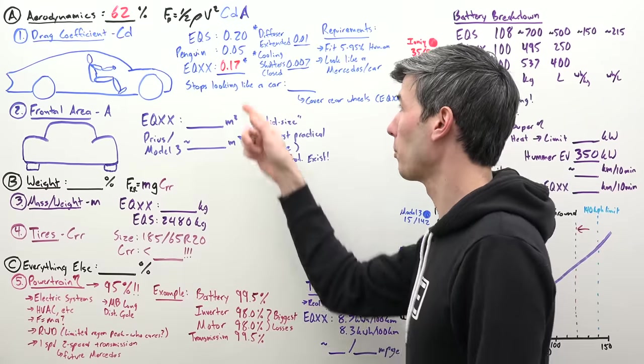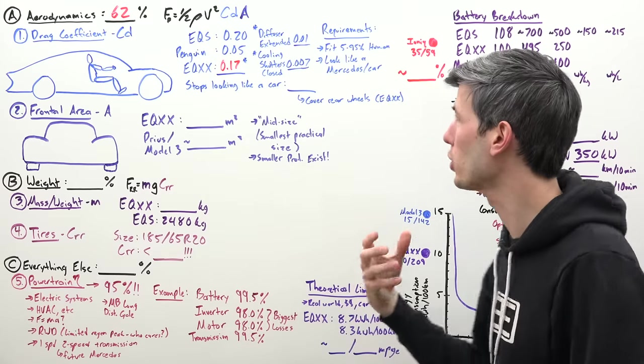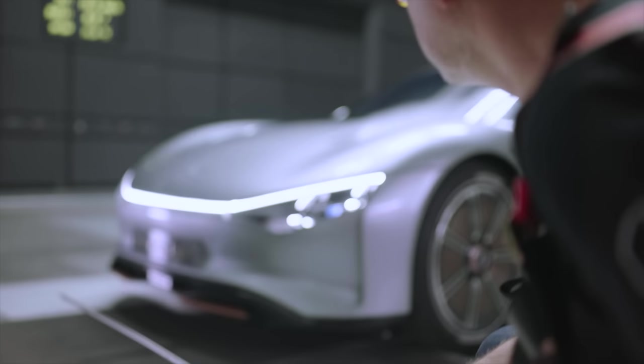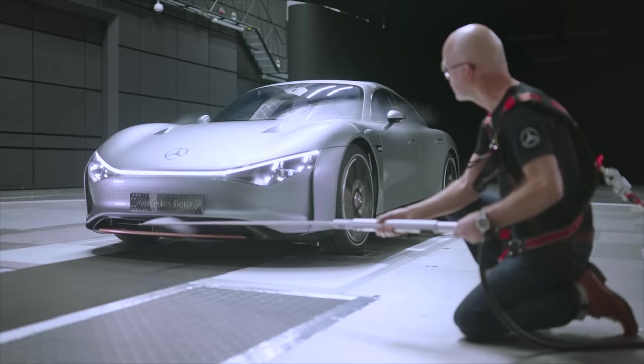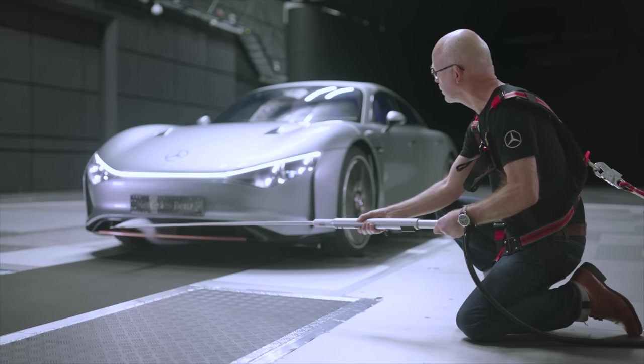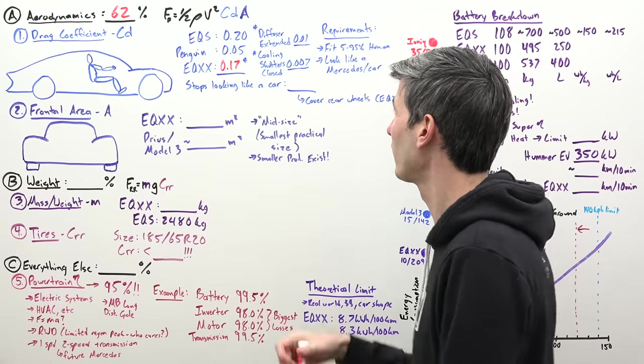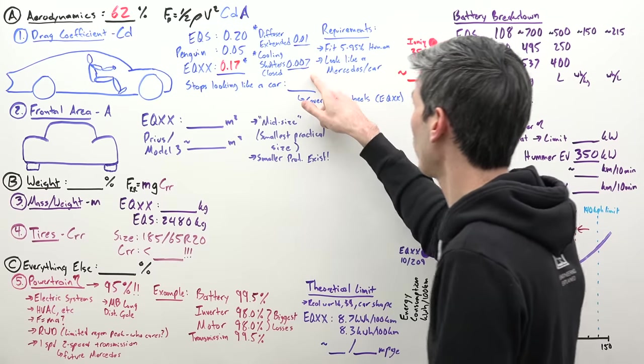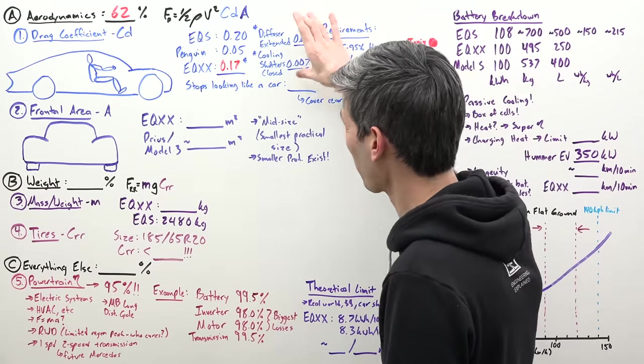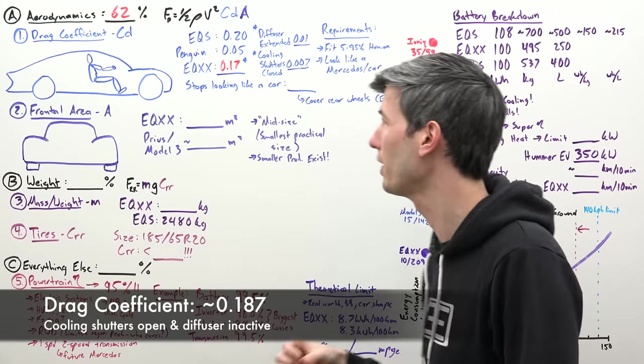Also this 0.17 is with the cooling shutters closed. There are some outlets, exhaust vents on the hood of the car. If this is actually opened and you're allowing airflow through the front with the shutters, that's giving you an additional 0.007 to your drag coefficient. So with both of those, that's putting you closer to 0.19.